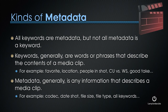Keywords, generally, are words or phrases that describe the contents of a media clip — for example, whether it's a favorite, what location it is, the people in the shot, close-up versus wide shot, good take, bad take — you get the picture. Metadata, though, is any information at all that describes a media clip: for instance, the codec, the date shot, file size, file type, all the keywords. Metadata is a much bigger category, of which keywords are but a part.